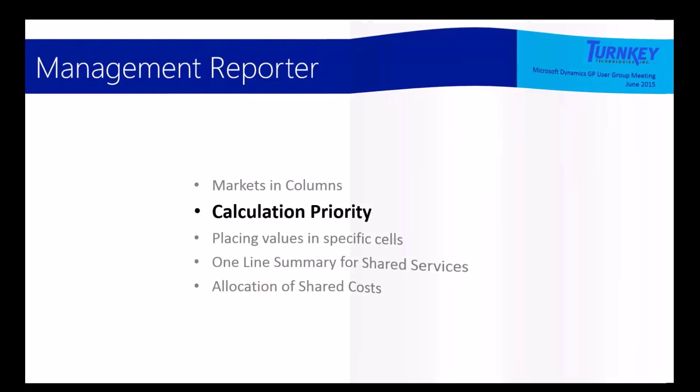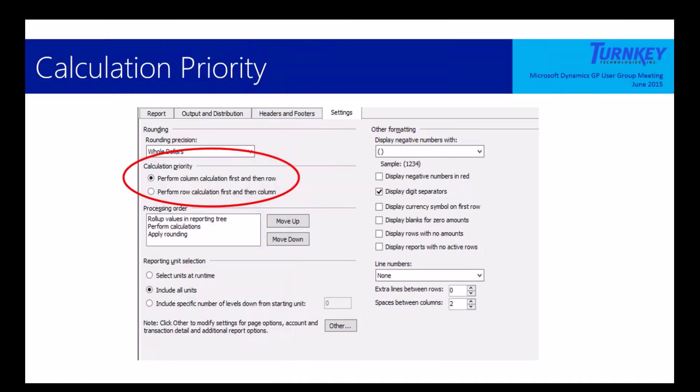Calculation priority. So in MR, in that first tab where it says report, you set up the row format, the column format. In the settings tab, there's this calculation priority. We're going to talk about this first because this is going to set us up to the next thing which is taking values with itself. Calculation priority says, do I want to perform the row or the column calculation first? Who has priority? If you've got a calculation in the row format and you've got a calculation in the column format where they intersect, one of them has to have priority.